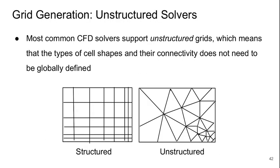In terms of grid generation, most common CFD solvers are unstructured. This means the types and shapes of cells and the way they're connected does not need to be globally defined. In a 2D visual example, on the left we see a structured grid where every cell is basically some kind of rectangle, versus an unstructured grid on the right where cells are made of triangles and shapes and sizes vary widely. Of course, on an unstructured solver you can still use a structured grid — you're just not constrained to doing so.